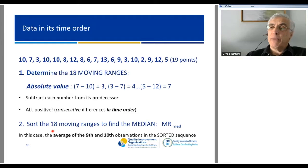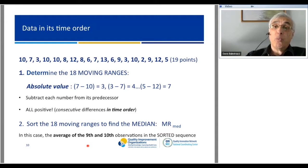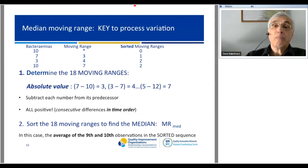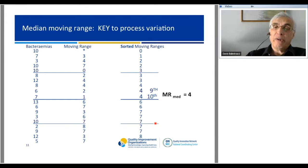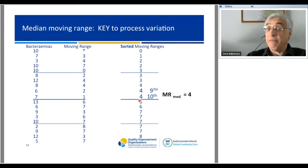We sort those 18 numbers to find the median. With 18 data points, it's going to be the average of the 9th and 10th. There's the data in its time order, there are the moving ranges, and here they are sorted from smallest to largest. Since there are 18, they meet in the middle—I have to average the 9th and 10th, both of which happen to be 4. So the median moving range is 4.